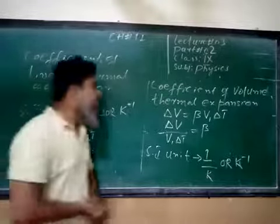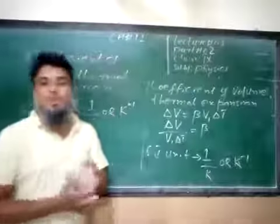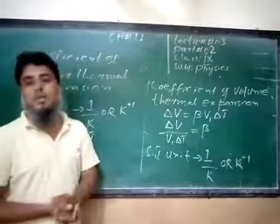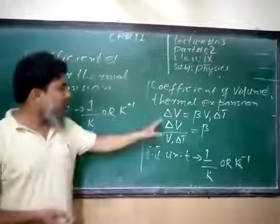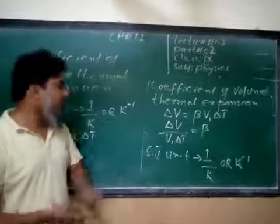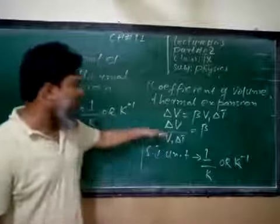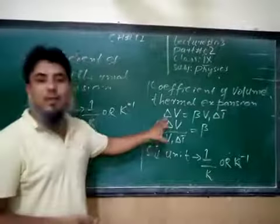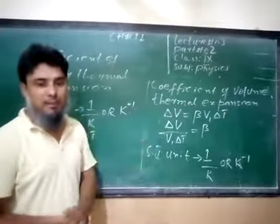Now, the coefficient of volume thermal expansion. The coefficient of volume thermal expansion and coefficient of linear thermal expansion — both definitions are the same. Delta V is equal to beta times V1 times delta T. So beta equals delta V divided by V1 times delta T. The definition is: fractional change in volume per degree rise in temperature.